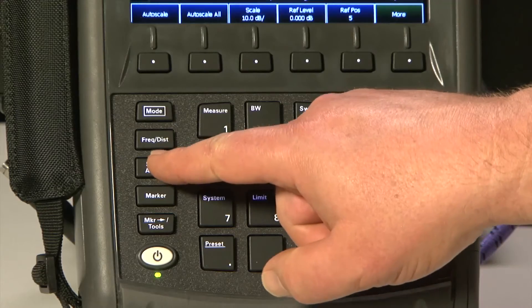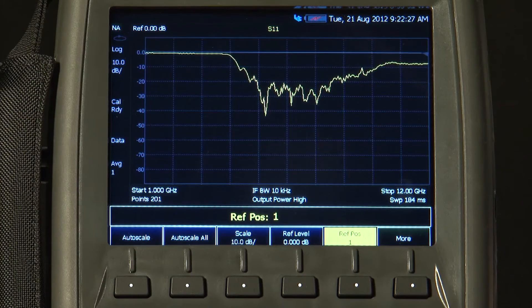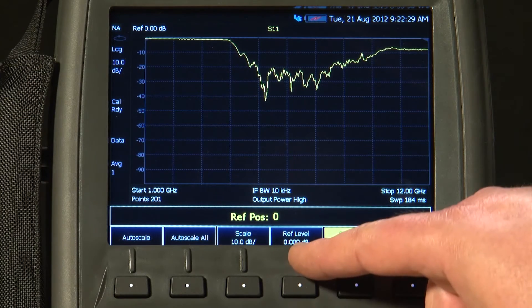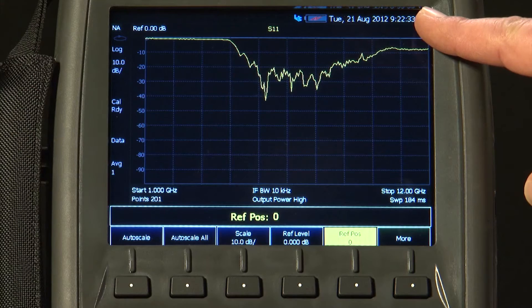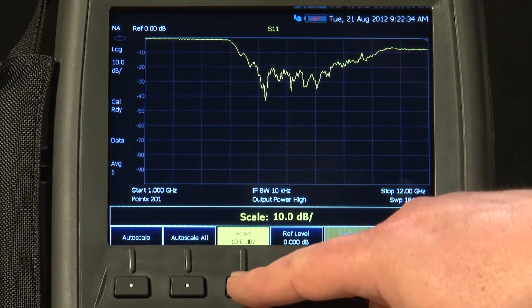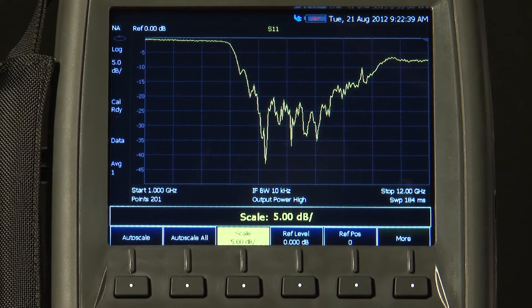And I will press the Amplitude button. We will set the reference position to 0, and the reference level is 0 dB, meaning that the top line on the display is 0 dB. The scale is 10 dB. I will just change that to 5, so we can see a bit more detail of the return loss trace.